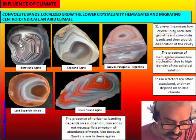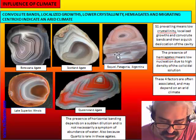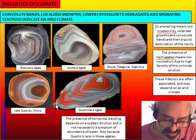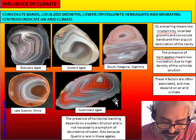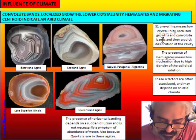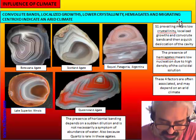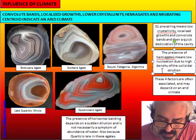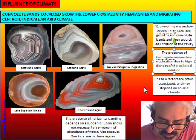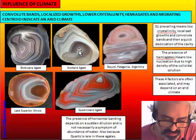Because of low crystallinity, the bands are continuous with no fortification, and the lateral change in thickness is quite important. There is a migrating centroid caused by localized growth. All the structures indicate an arid climate. We have facies S1 prevailing, globular chalcedony prevailing — meaning low crystallinity — meaning localized growth and convoluted bands. This means quick desiccation of the cavity. The presence of hemi-agate, very common in this type, means low nucleation due to high density of the colloidal solution — also indicative of quick desiccation. All of these factors are consistent with an arid climate.